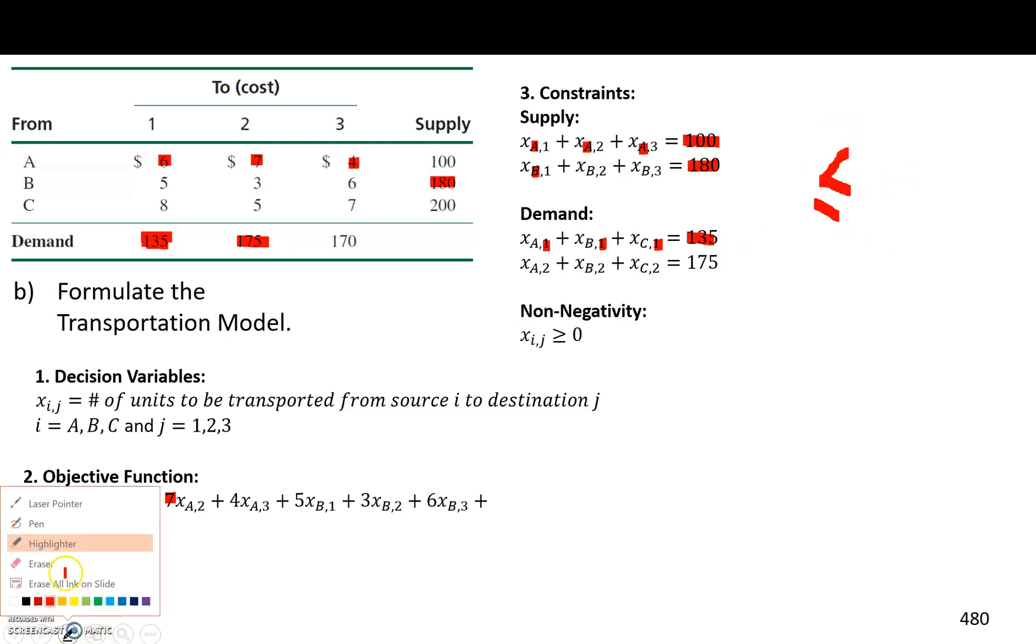So, as an example, if the supply here was 200 instead of 100, then our supply will be greater than our demand.